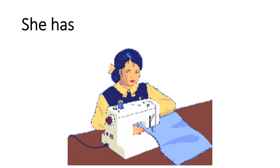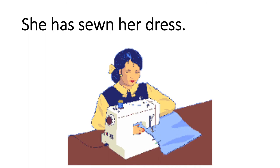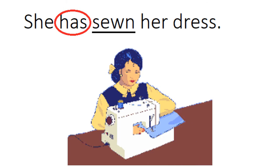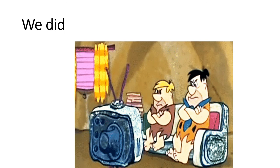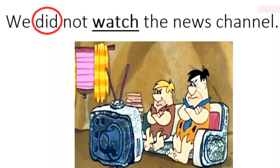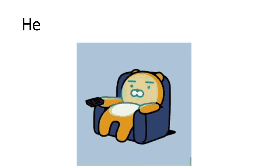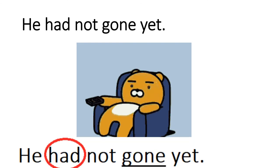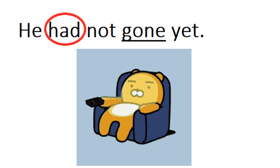Next: She has seen her dress — उसने अपना dress देख लिया है. 'Has' helping verb है और 'seen' main verb है. अगला: We did not watch the news channel — हमने news channel नहीं देखा. 'Watch' main verb है और 'did' helping verb है. Next: He had not gone yet — वो अभी तक नहीं गया था. 'Had' helping verb है और 'gone' main verb है.